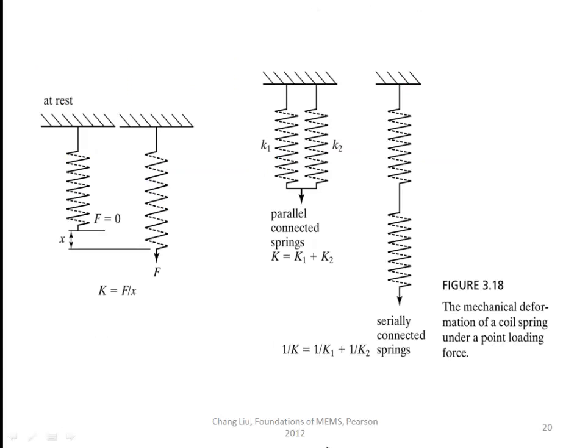Here the spring constant is force divided by displacement. For two springs connected in parallel, the total spring constant is k₁ plus k₂. For two springs connected in series, 1/k equals 1/k₁ plus 1/k₂.